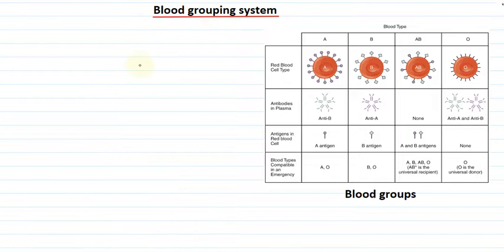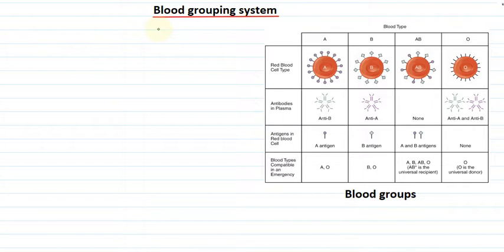In our previous videos, we learned that blood is a fluid connective tissue. This blood is pumped by our heart and circulated throughout the body. While it circulates, it carries various nutrients, hormones, nutritious substances, and respiratory gases throughout our body. Do you know that human beings have different groups of blood? Today let's study about these different groups and see how we can classify blood into different groups.